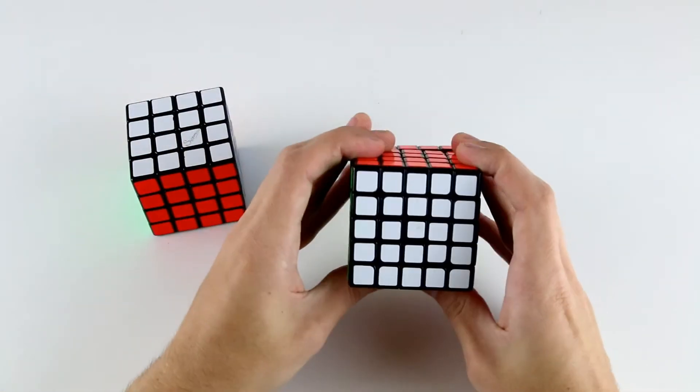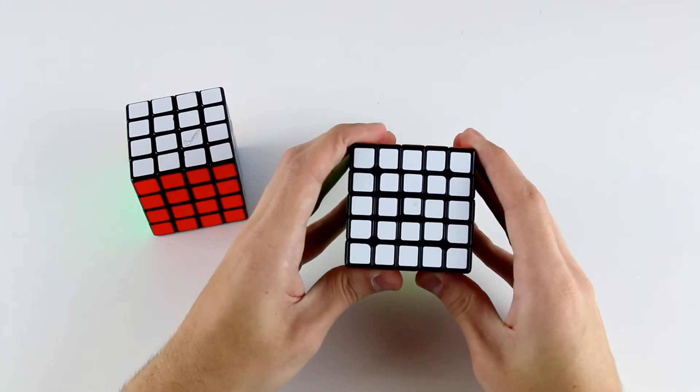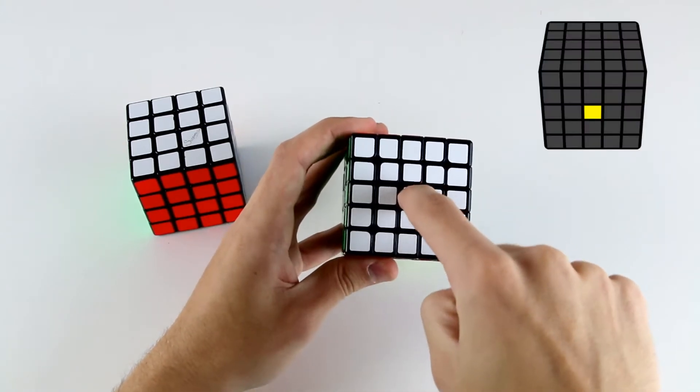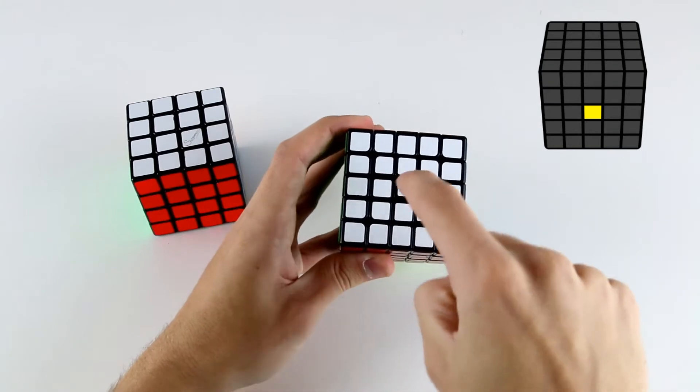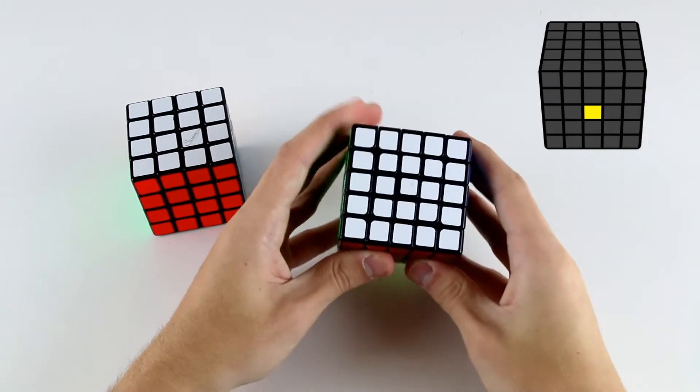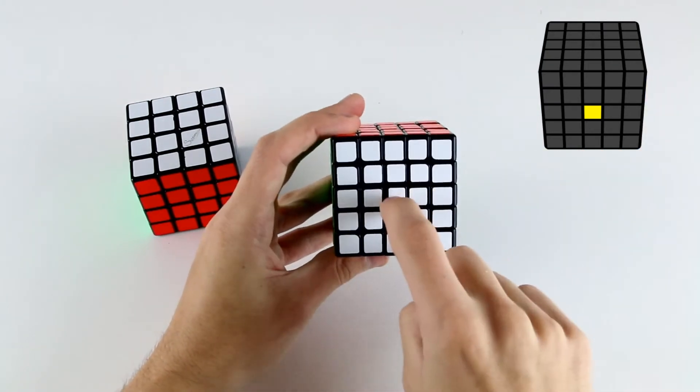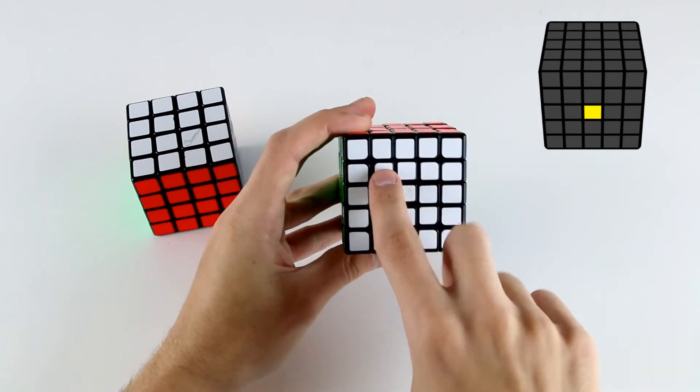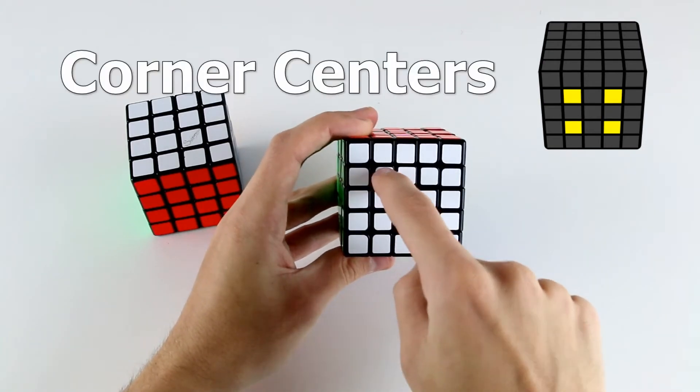However, on a 5x5, there are essentially three different types of center pieces. There's the middle one which denotes the color of the side and that one is fixed, so we don't need to worry too much about that. In addition to this middle one, we have two different types of center pieces: the corner centers,